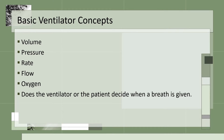The basic ventilator concepts are: volume — the amount of air going in and out; pressure — the amount of pressure used for inhalation and exhalation; rate — the number of breaths; flow — time allowed for air going in; oxygen — the amount of supplemental oxygen needed, also called FiO2. The sixth concept is deciding whether the patient takes a breath or the ventilator takes a breath. The combination of all these concepts provides different ventilator modes.